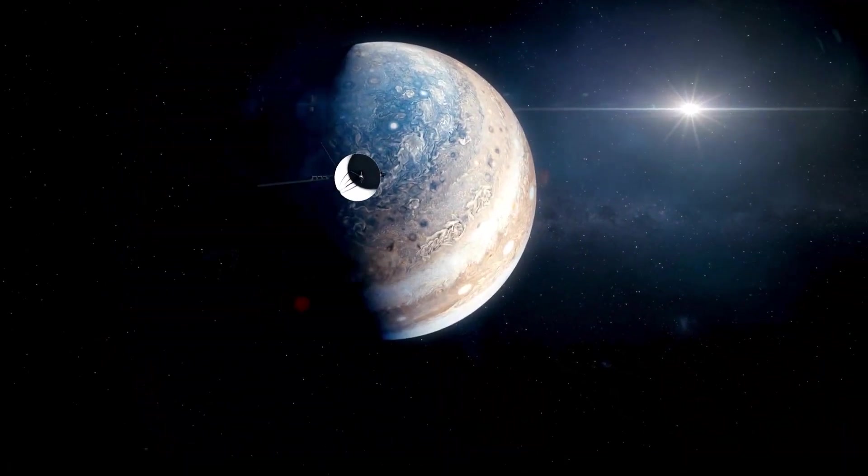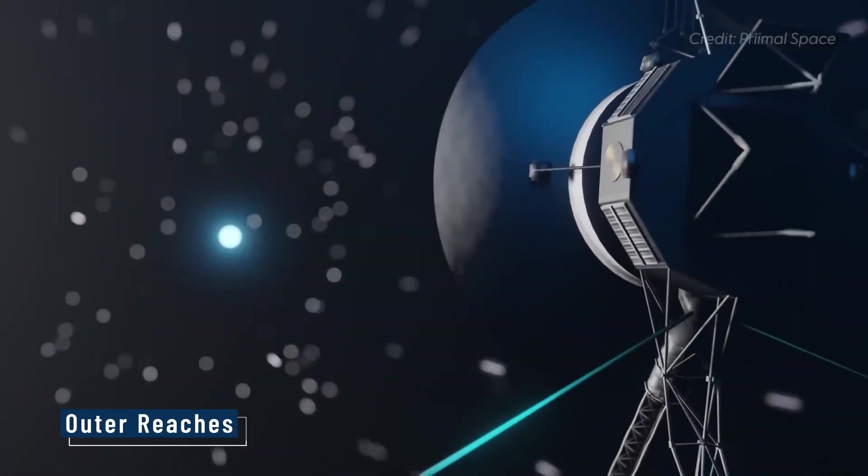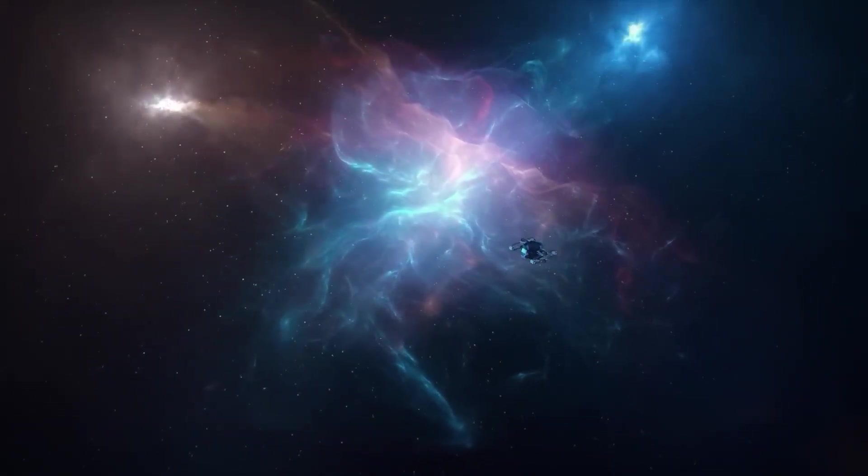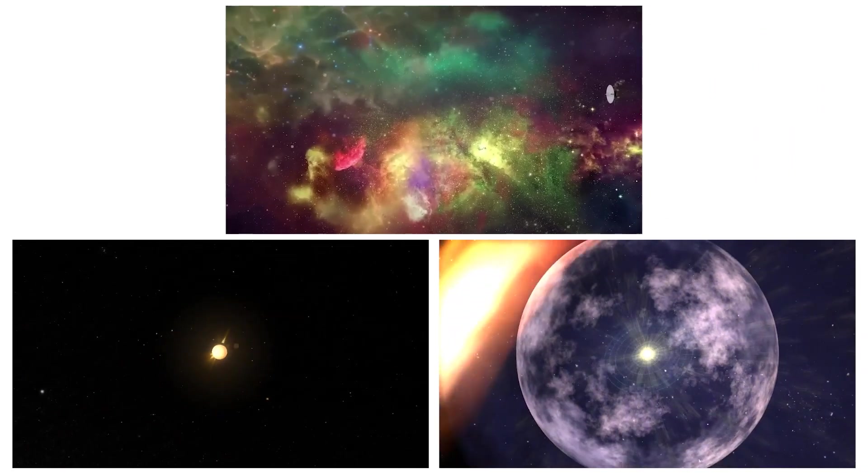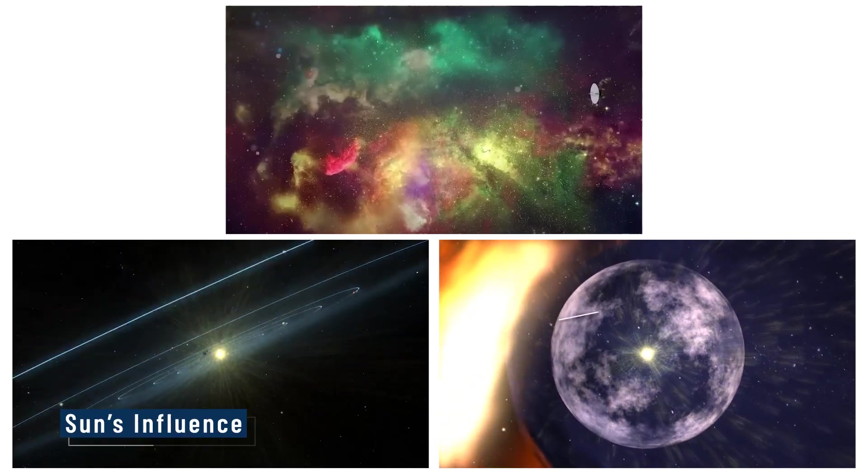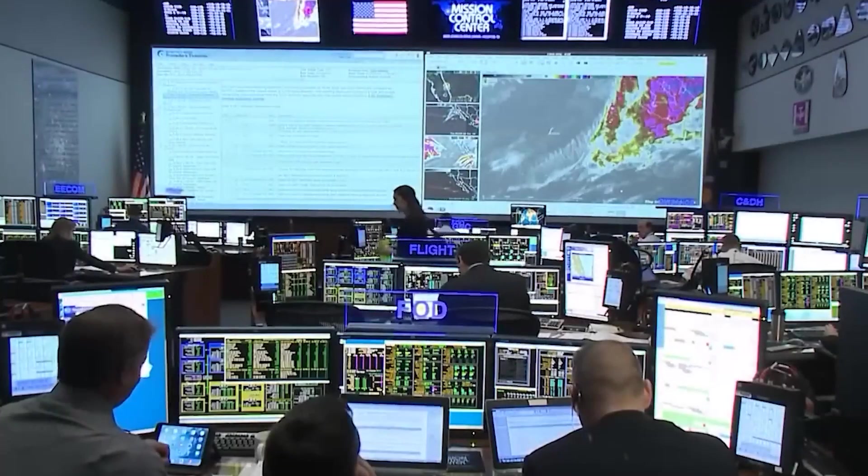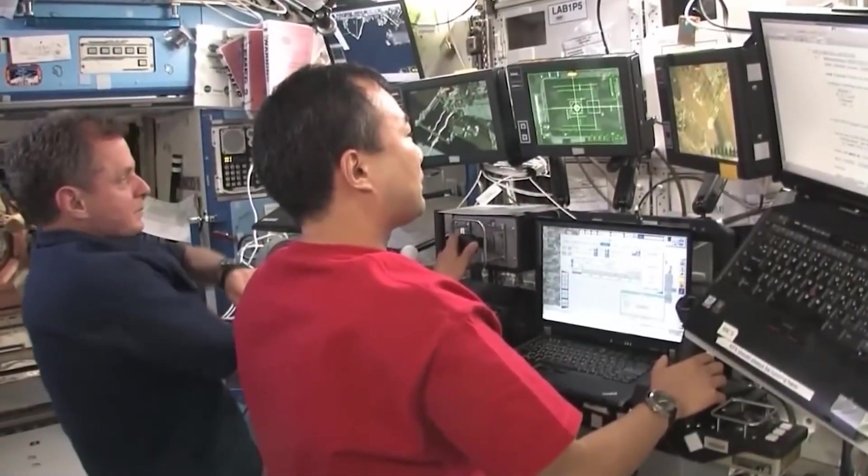For decades, Voyager 2 has silently journeyed through the outer reaches of our solar system, venturing where no spacecraft has gone before. As it crossed the heliopause, the boundary where the sun's influence ends and interstellar space begins,